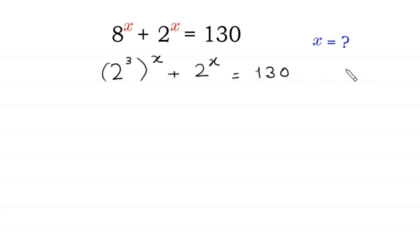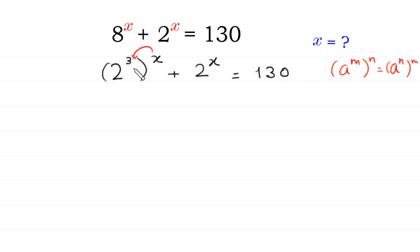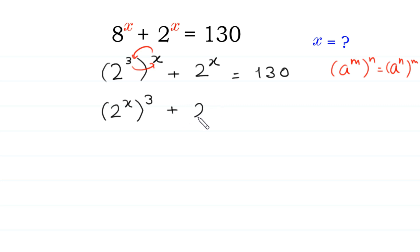Now, according to the property of exponents, a to the power m, whole to the power n, is equal to a to the power n, whole to the power m. We can write the power x inside the brackets and power 3 outside, giving us 2 to the power x, whole to the power 3, plus 2 to the power x, is equal to 130.